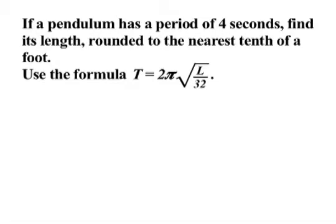If a pendulum has a period of 4 seconds, find its length rounded to the nearest tenth of a foot. Use the formula T = 2π√(L/32).